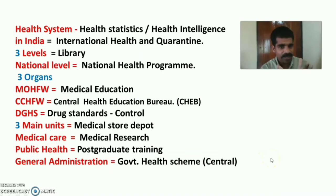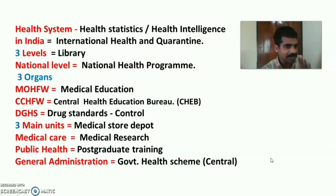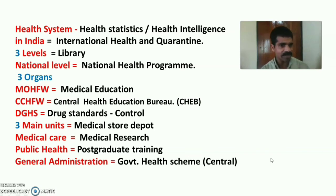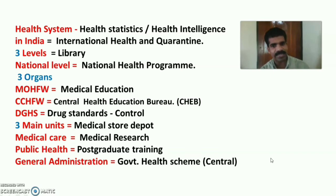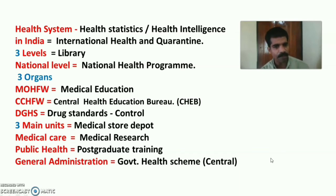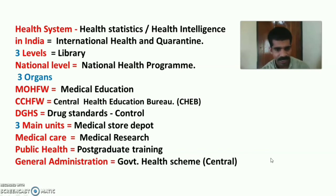Expanding the mnemonic: 'Health System' = Health Statistics or National Health Intelligence; 'in India' = International Health and Quarantine; 'three levels' — L = Library (National Medical Library); 'National Level' = National Health Programs; 'Ministry of Health and Family Welfare' = Medical Education; 'Central Council of Health and Family Welfare' = Central Health Education Bureau; 'DGHS' = Drug Standards; 'main units' = Medical Store Depot; 'Medical Care' = Medical Research; 'Public Health' = Postgraduate Training; 'General Administration' = Central Government Health Schemes.